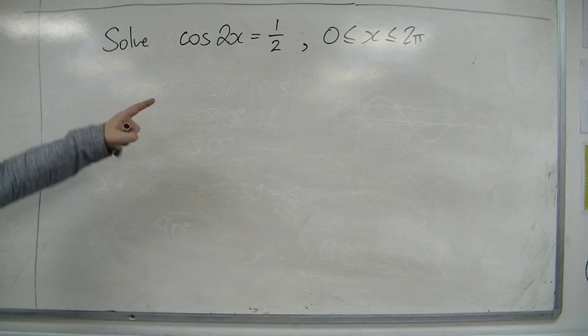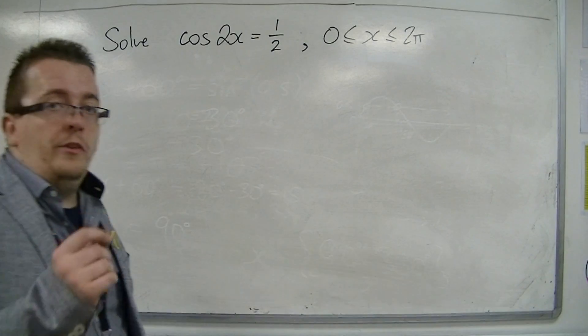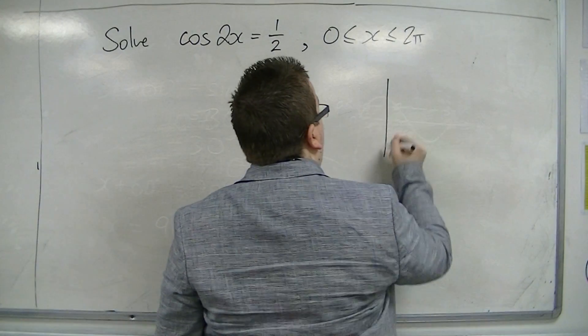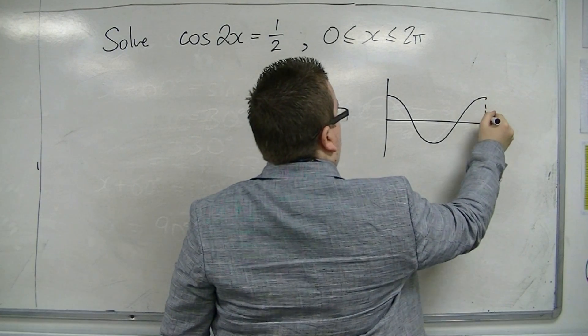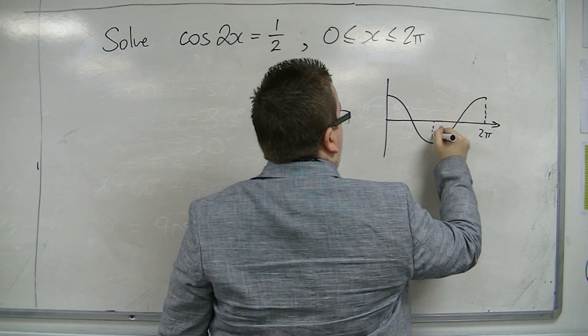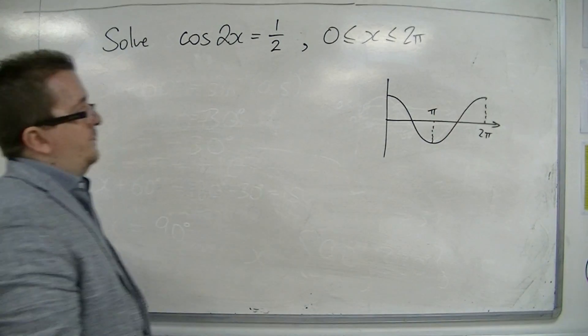And now, because we're working with cos, I'm going to do a small cos curve sketch at the side. We're in radians, so 2 pi, and that's pi.